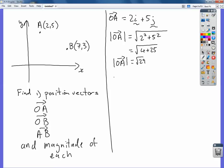Same again now for OB. OB, it goes from the origin to B, is 7i plus 3j.